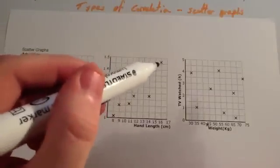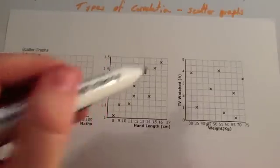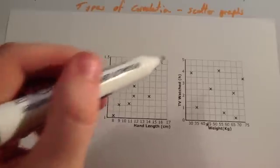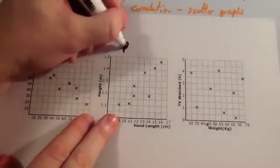It means as the hands get tall, if you've got big hands, you're tall. If you've got short hands, you're short. So it's got positive correlation. So this is a positive correlation.